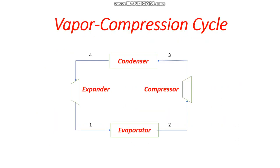Here we represent the vapor compression cycle. The liquid enters the evaporator, evaporates, then moves to the compressor where it is compressed. It is then condensed in the condenser, and moves into the expander or turbine where the expansion process takes place, returning it to its original state and recycling it back to the evaporator.